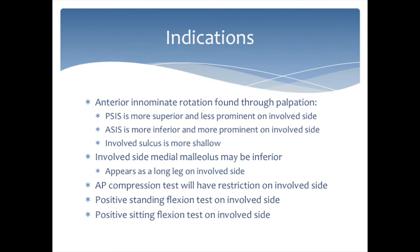Indications for using this technique: upon palpation, the PSIS is found to be more superior and less prominent, while the ASIS can be found to be more inferior and more prominent on the involved side. Also, the involved sulcus presents more shallow upon palpation. When comparing leg length, the medial malleolus on the involved side may be inferior, presenting as a longer leg on that side.